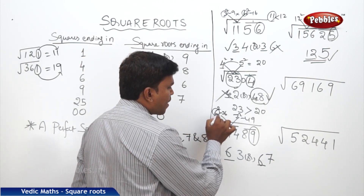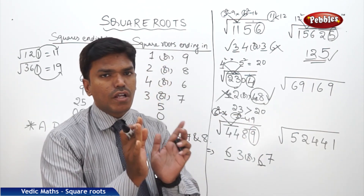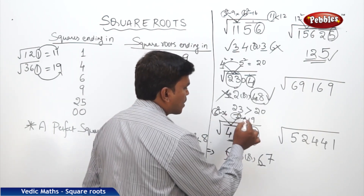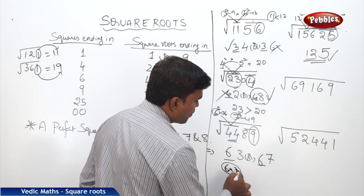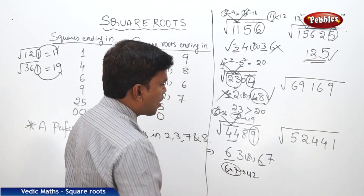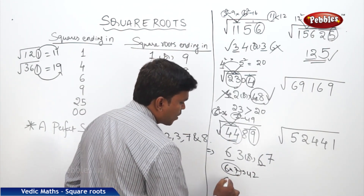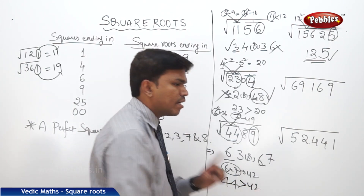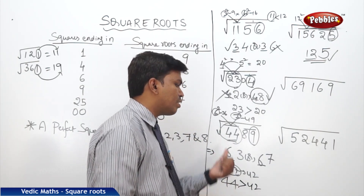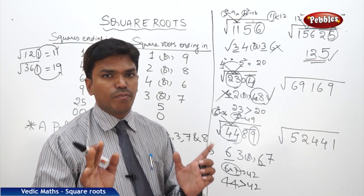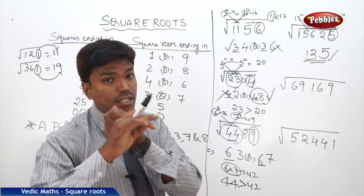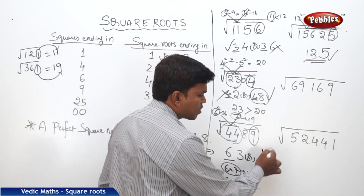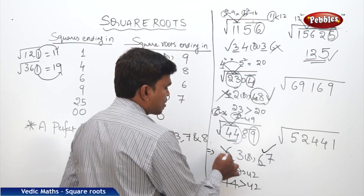To find out which is the right answer between 63 and 67, simply multiply the border square numbers. The second partition 44 falls between 6 and 7, so multiply 6 × 7 = 42. Compare the second partition number 44 with 42. Is 44 greater than 42 or less than 42? It is greater than 42. If the second partition number is greater than the product, obviously the greater number is your answer. So the answer is 67, not 63.